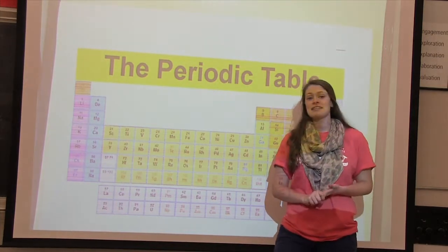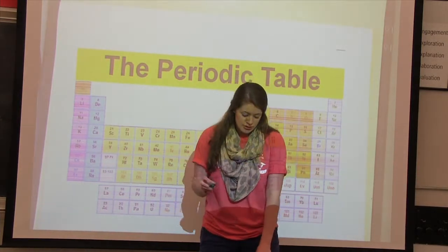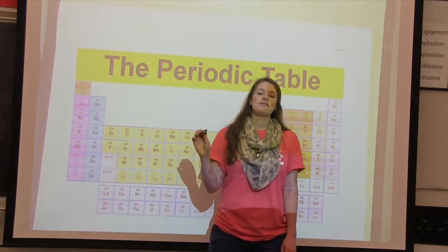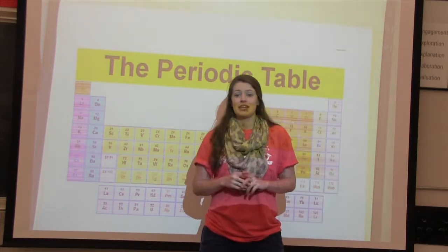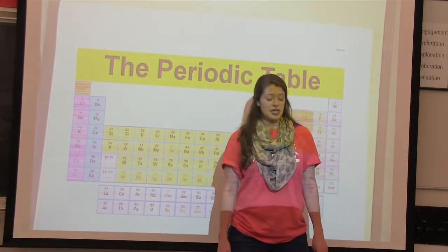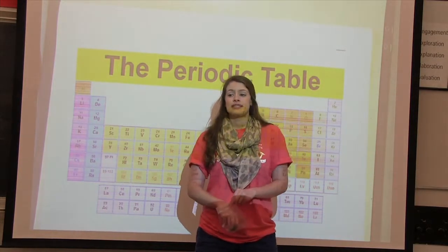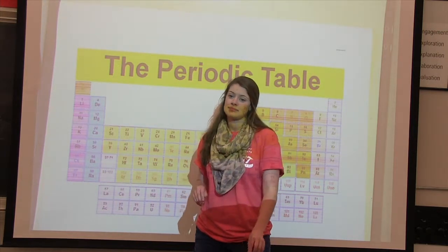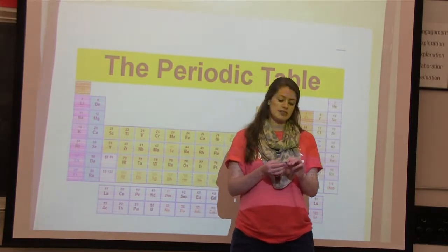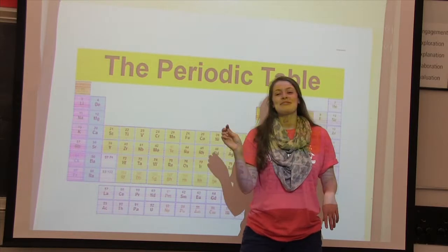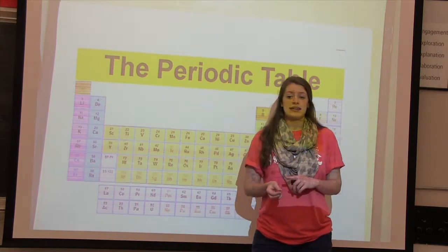Now we're going to move on to our next test, which is streak. Leaving the tile on your desk, you're going to brush the mineral over the tile and see what color the streak makes, then write that down. After that, we're going to do our next test, which is a magnetic test. Does everyone know what magnetic means? The metals attract each other. So we're going to use this magnet and brush it over the mineral to see if it's magnetic or not, and write that down on your piece of paper.